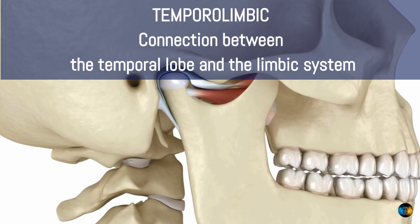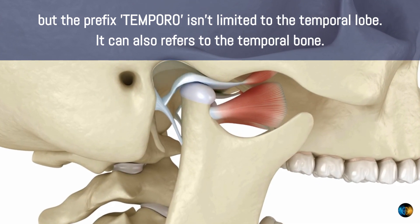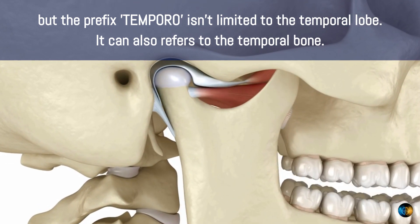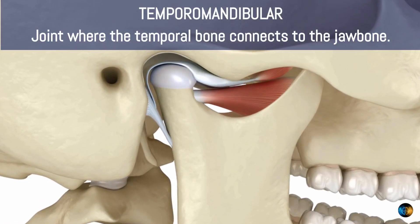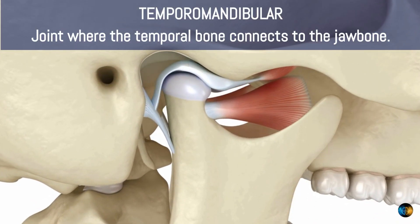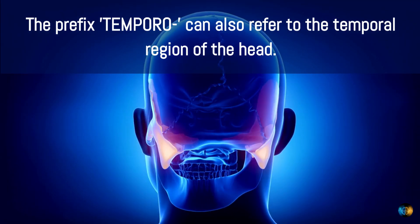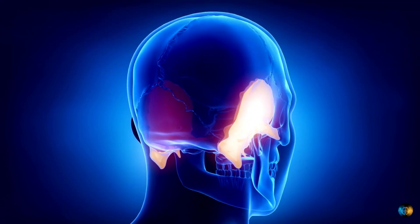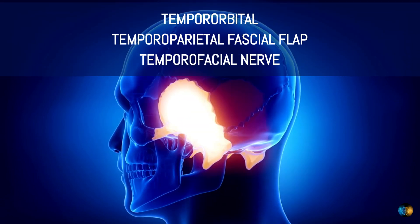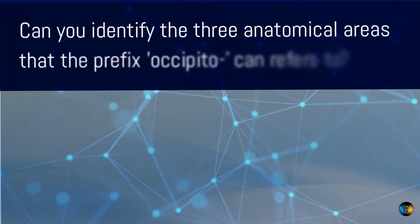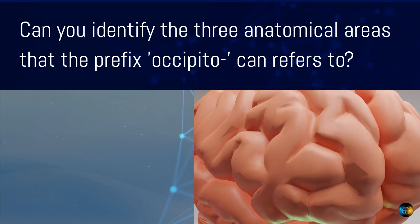The prefix 'temporo' isn't limited to the temporal lobe — it can also refer to the temporal bone located at the sides and base of the skull. For example, temporomandibular is the joint where the temporal bone connects to the jaw bone. It can also refer to the temporal region of the head, as in temporoparietal fascial flap or temporofacial nerve.